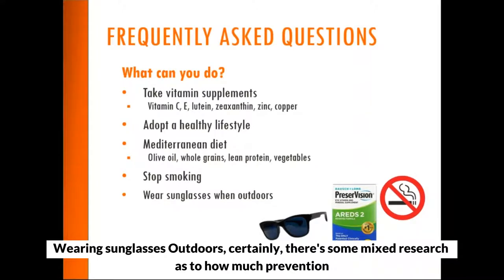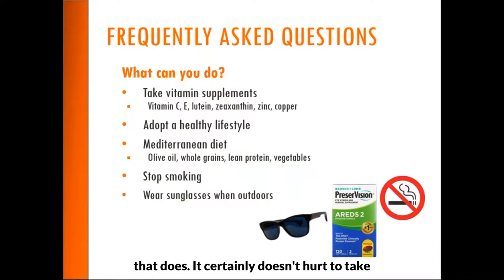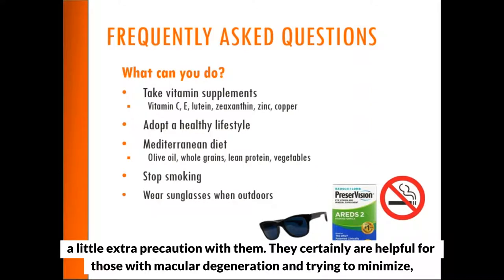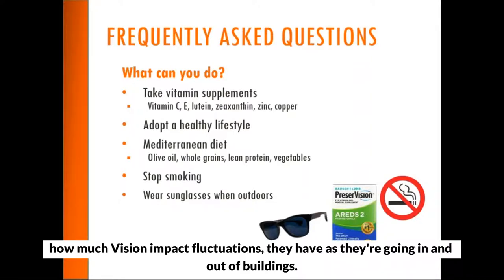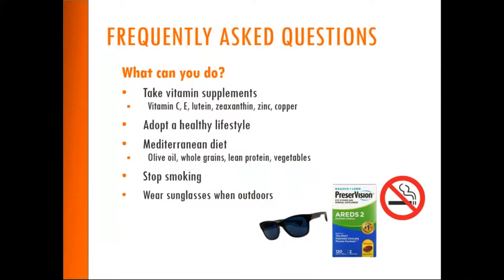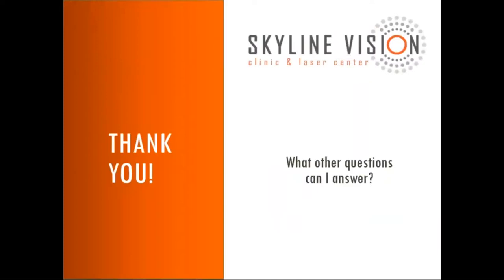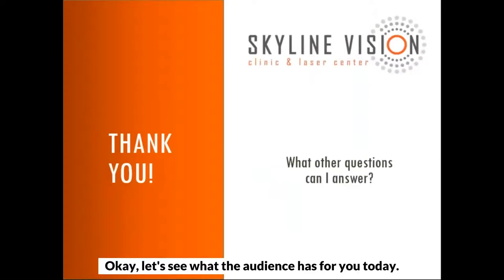Wearing sunglasses outdoors — there's some mixed research as to how much prevention that provides, but it certainly doesn't hurt to take a little extra precaution. Sunglasses are certainly helpful for those with macular degeneration in trying to minimize how much their vision fluctuates as they go in and out of buildings, going from bright light to dim light.